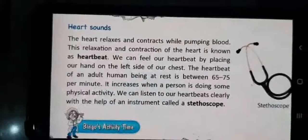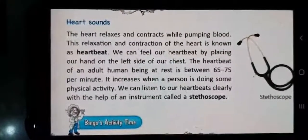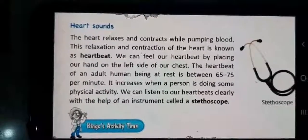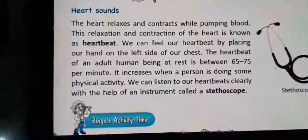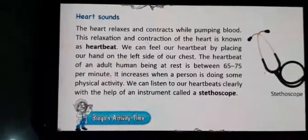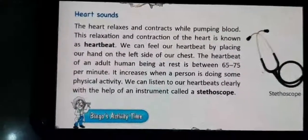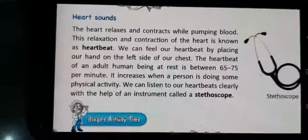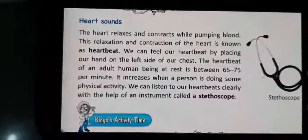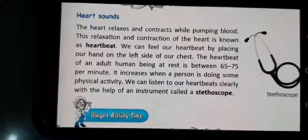The heart relaxes and contracts while pumping blood. The relaxation and contraction of the heart is known as heartbeat. We can feel our heartbeat by placing our hand on the left side of our chest, because the heart is located on the left side. The heartbeat of an adult human being at rest is between 65 to 75 per minute. It increases when a person is doing some physical activity.